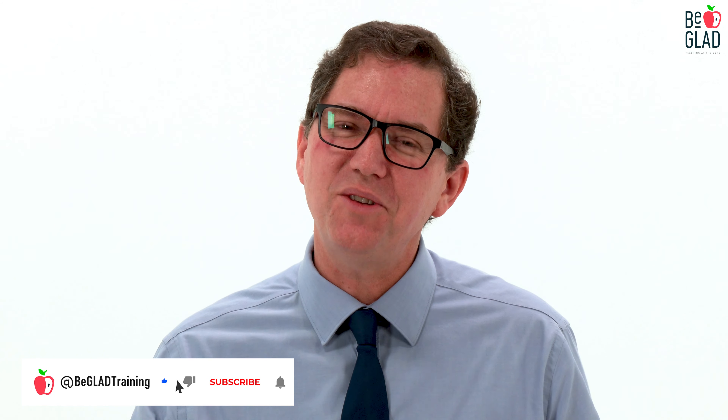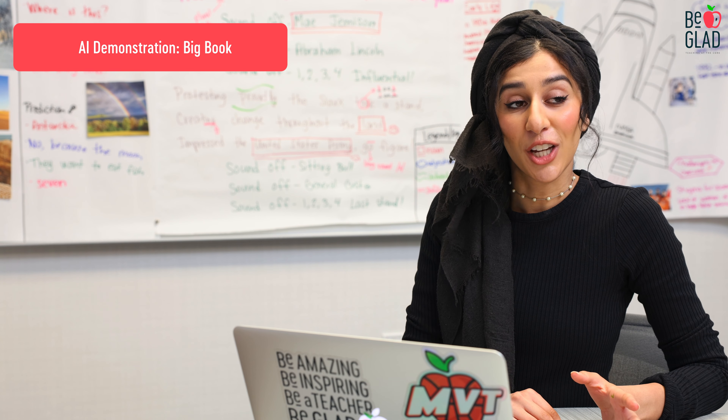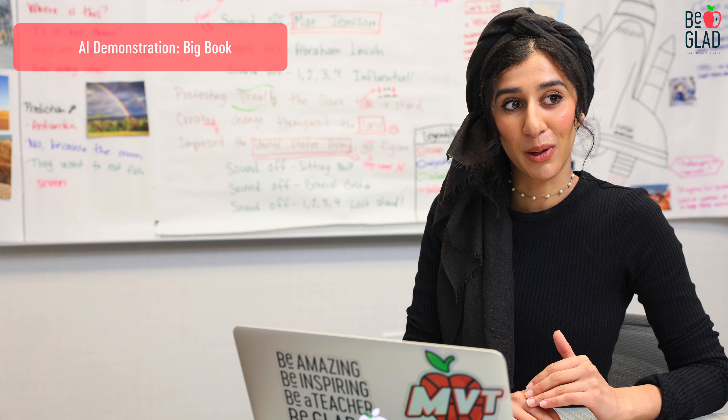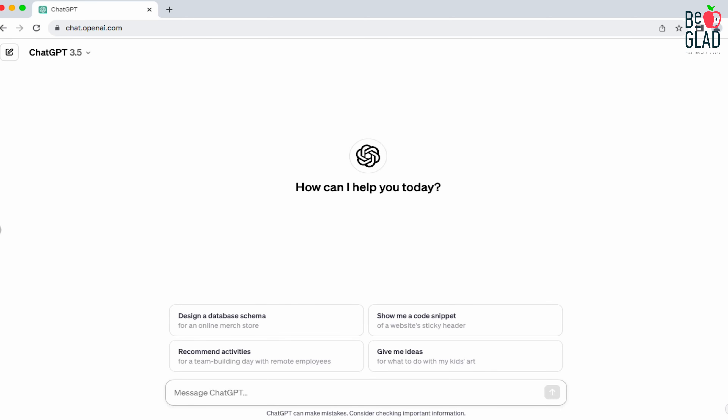In the next video, we'll continue to discuss how to incorporate artificial intelligence into our planning process to save time. Let's see how this process would look in a big book. Using ChatGPT for generating your big book text is a great way to cut down your planning time. You can come up with your main idea based on the standards you are teaching, and once you have that main idea, you can use AI to generate some of the supporting details to add to your big book.